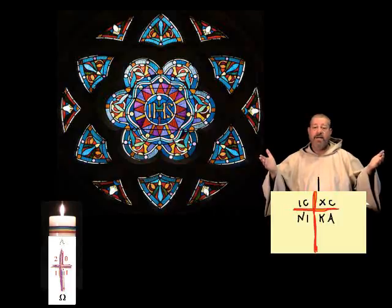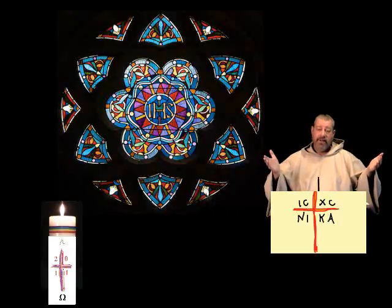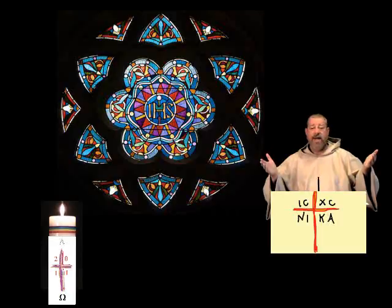Our beloved who art in heaven, hallowed be thy name. Thy kingdom come, thy will be done on earth as it is in heaven. Give us this day our daily bread, forgive us our trespasses, as we forgive those who trespass against us. Lead us not into temptation, but deliver us from evil. For the kingdom, the power, and the glory are yours, now and forever.